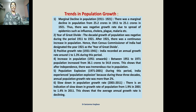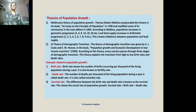Fifth point: population explosion. From 1971 to 2001 there was a sharp rise in population, known as population explosion, because over three decades the annual growth rate exceeded 2 percent. Sixth point: slowdown in population growth rate. From 2001 to 2011 there was again a decline, with the growth rate coming down to 1.9 percent in 2001 and 1.4 percent in 2011, showing the average annual growth rate is declining.